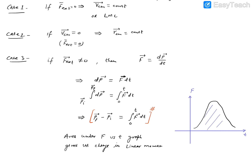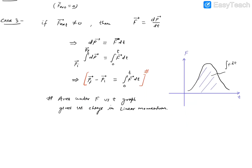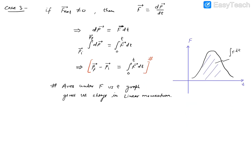So the area under the F versus T graph gives us the change in linear momentum. Sometimes the force can vary in some random way. If this force is given graphically, you can easily find out the area under the graph. This area equals ∫F dt from initial T to final T. It can be graphical-based or numerical-based. This is a special application related to an important term which we call impulse.